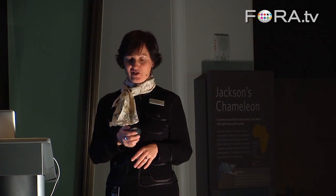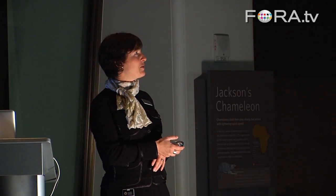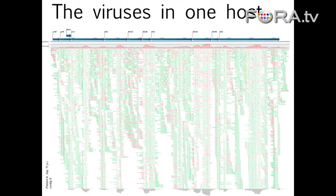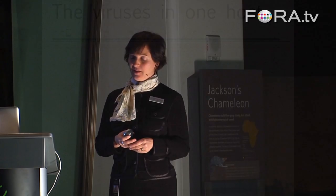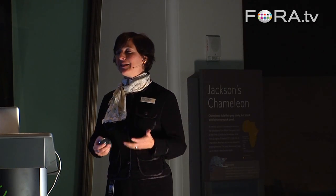That's been an exciting topic of my research in the last couple of years — applying that technology to a single host. When I showed you that phylogeny, every tip on that tree represented the consensus virus from a single host. But underneath that single virus consensus sequence is actually a whole population of different viruses, and these sequence traces are all different in subtle ways. So we are really bags of many, many different viruses.